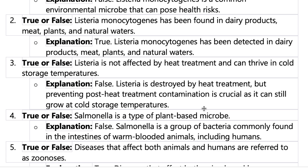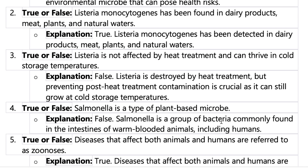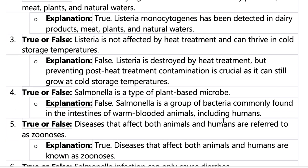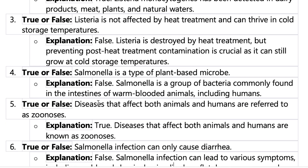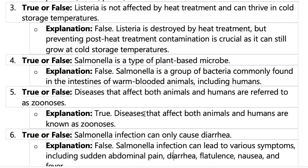Question four: Salmonella is a type of plant-based microbe. It's not plant-based — it affects humans and animals, not plants. Question five: Diseases that affect both animals and humans are known as zoonosis. Yes, zoonosis refers to diseases that affect both animals and humans — remember that.